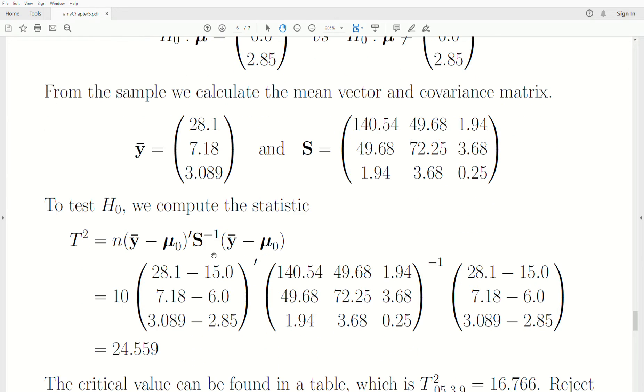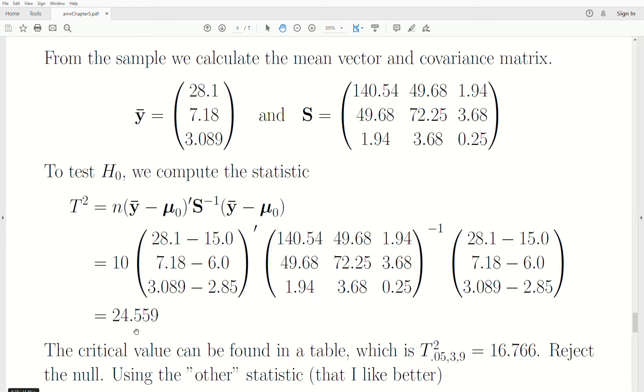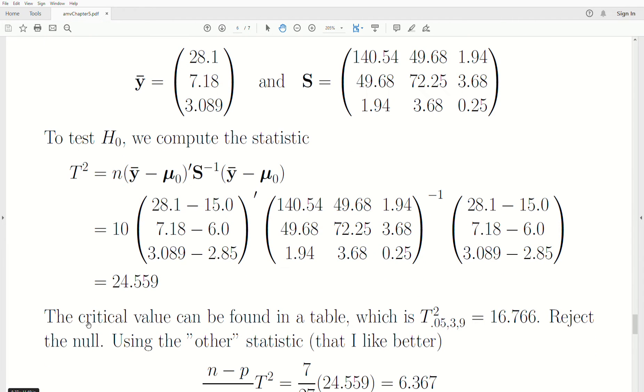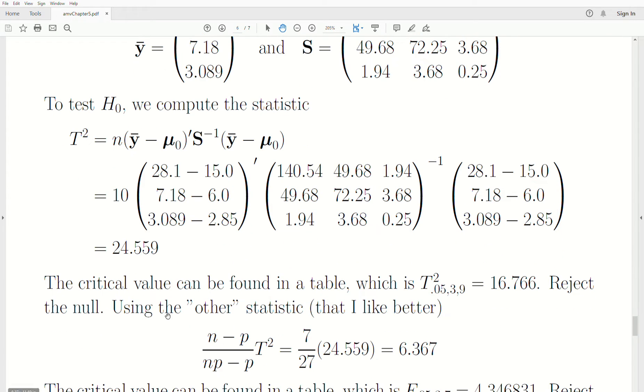To test it, we calculate this statistic. T squared is equal to, and this is the formula as a reminder, 10 observations, sample mean vector minus the hypothesized population mean vector, sample covariance matrix, again, Y bar minus mu naught. After crunching those numbers, we get a value of 2.559. The critical value found in the table, which is T² 0.05, 3, and 9. 3 is the P, that's the number of dimensions, and 9 was N minus 1. And it's 16.766, and so our test statistic is bigger than this critical region, so we reject the null hypothesis and say that the data indicates that the population mean vector is not what it's hypothesized to be.